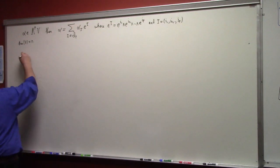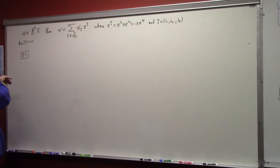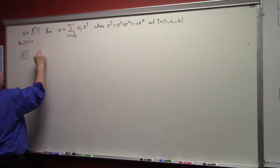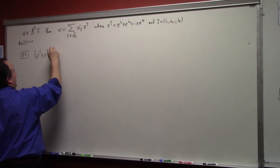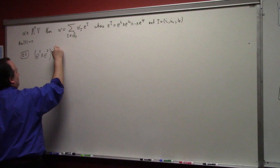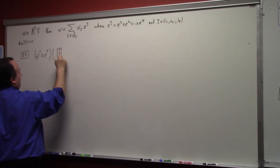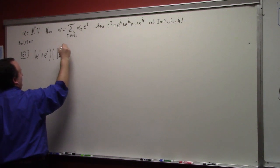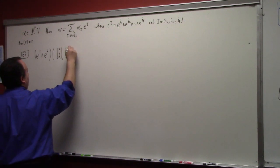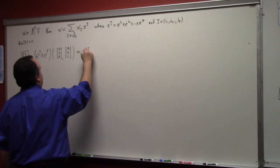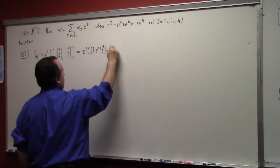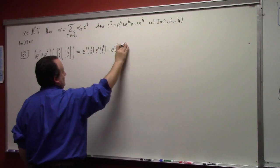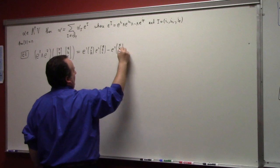All right. So example two, let's look at E one wedge E two, let's let that act on a pair of vectors. Let's say X, Y, Z and A, B, C. So we know what that does. That's E one of X, Y, Z times E two of A, B, C minus E two of X, Y, Z times E one of A, B, C, right?